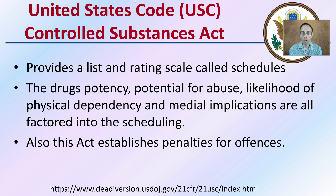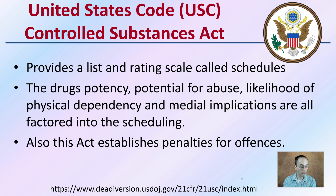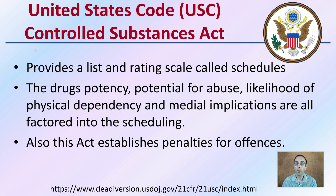Looking at the United States code on controlled substances — the website is located right over here — it provides a list and a rating scale called schedules. A drug's potency, potential for abuse, likelihood of physical dependency, and medical implications are all factored into the level of scheduling. This act also establishes penalties for offenses. Other videos will go into more detail, but this gives you the general idea of the classification for legal and illegal drugs.